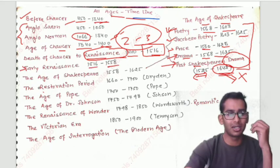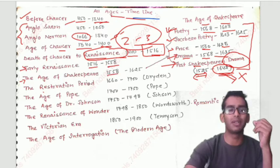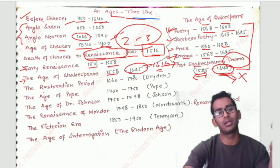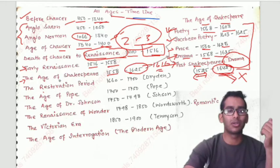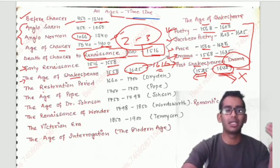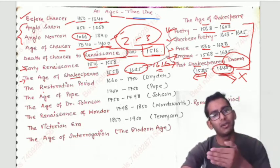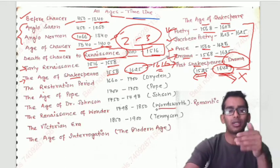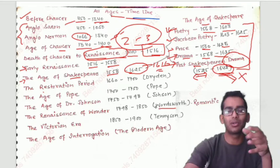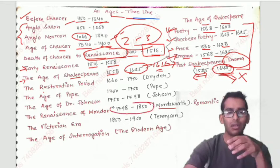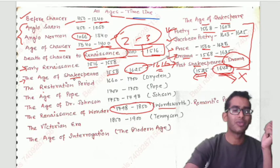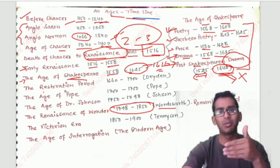The Age of Shakespeare is 1558 to 1625. Shakespeare died in 1616, so why does the age extend to 1625? In English literature, the name of an age reflects where the writer's influence reaches. Similarly, the Romantic period is also called the Age of Wordsworth because Wordsworth had great influence. This is why Shakespeare's age is dedicated to his influence.